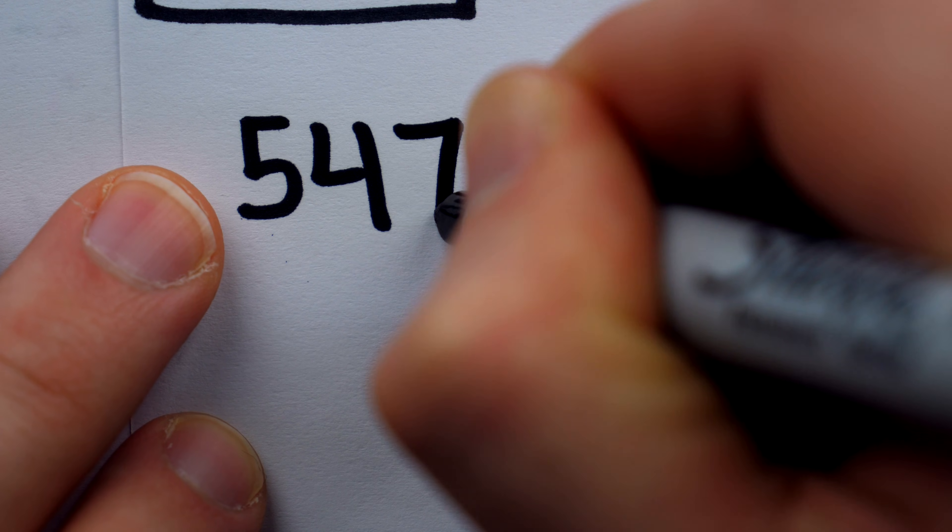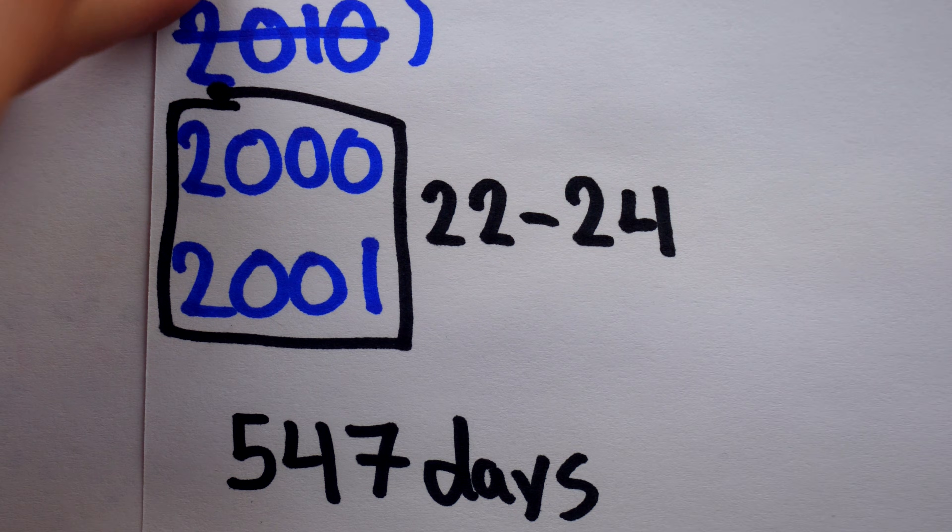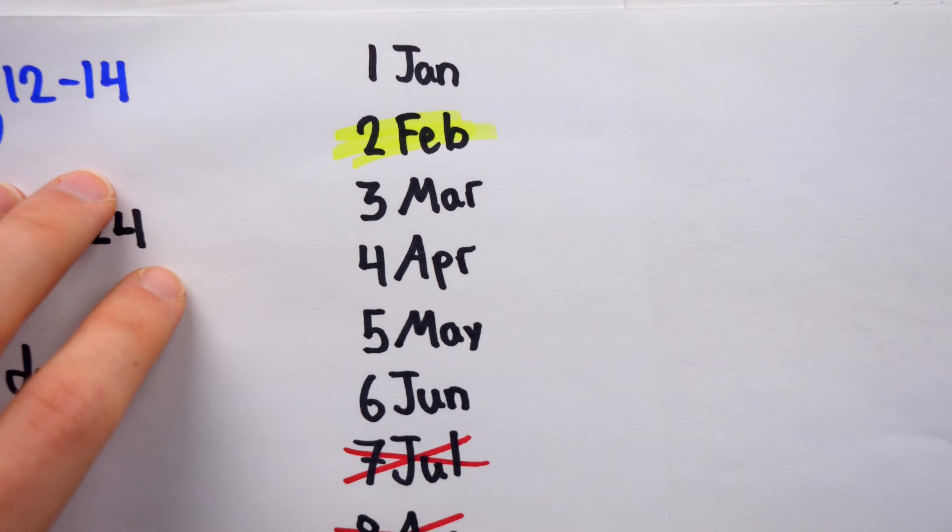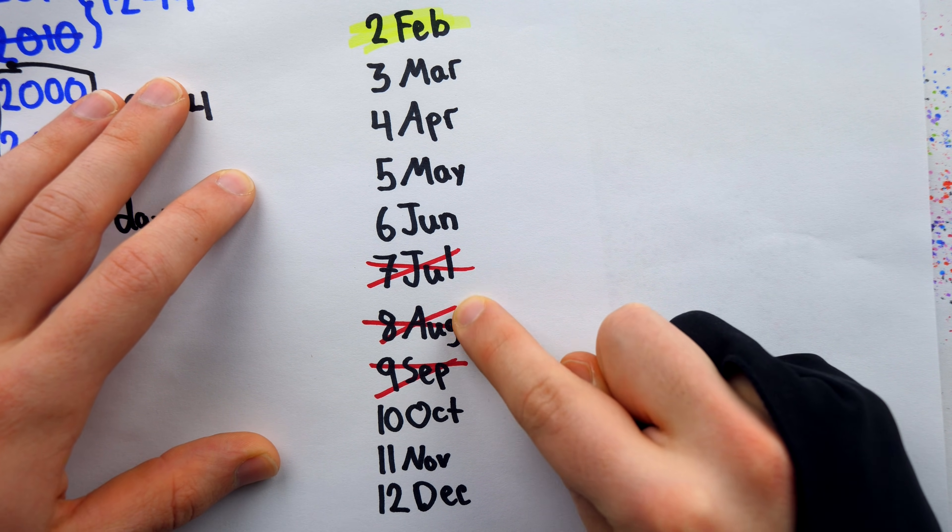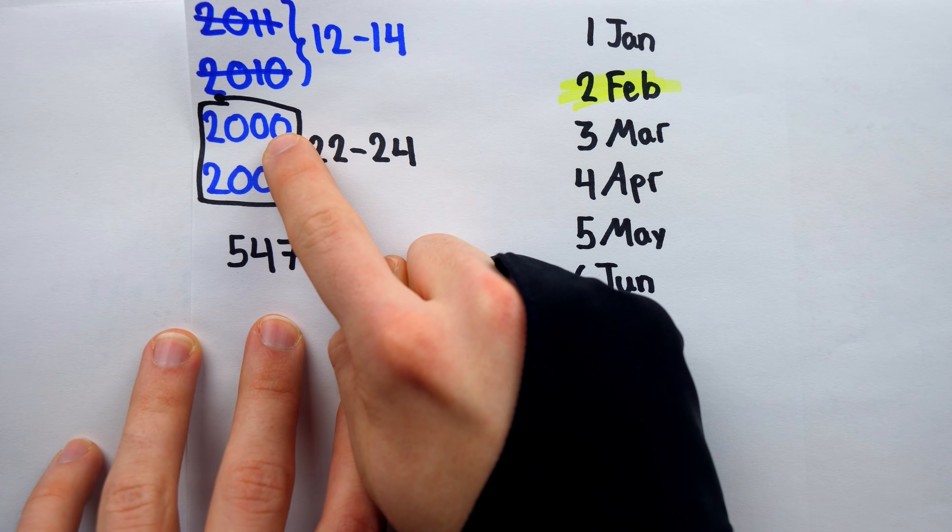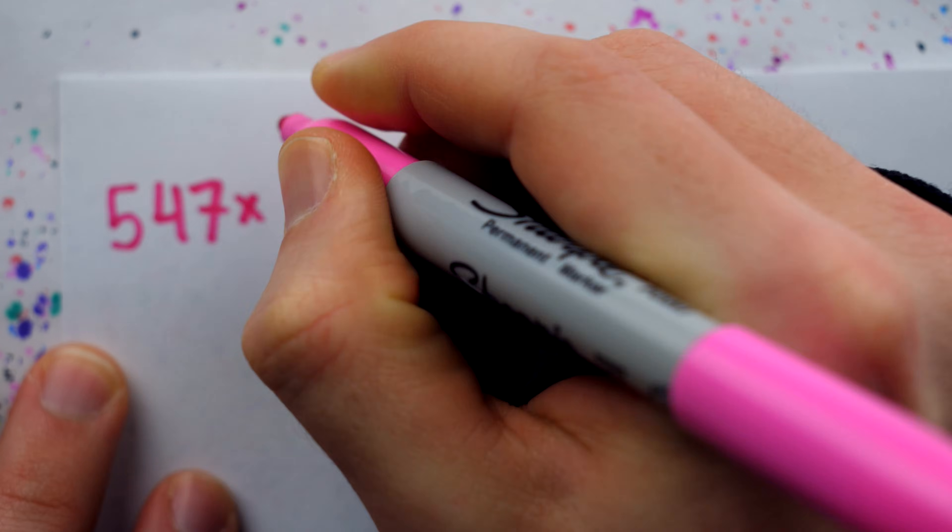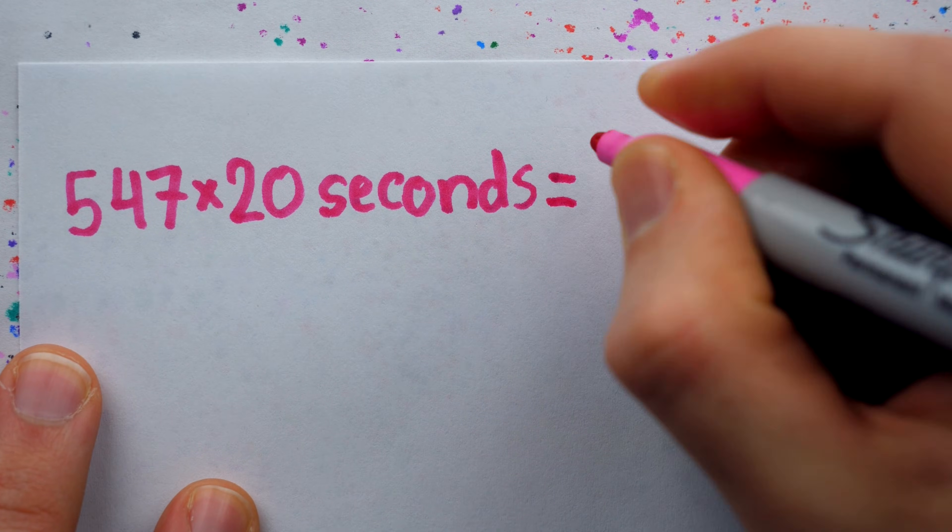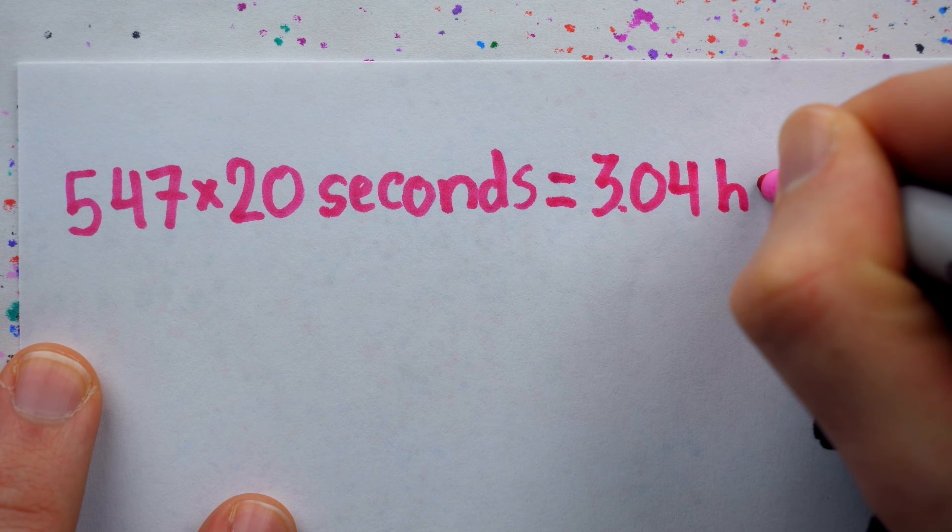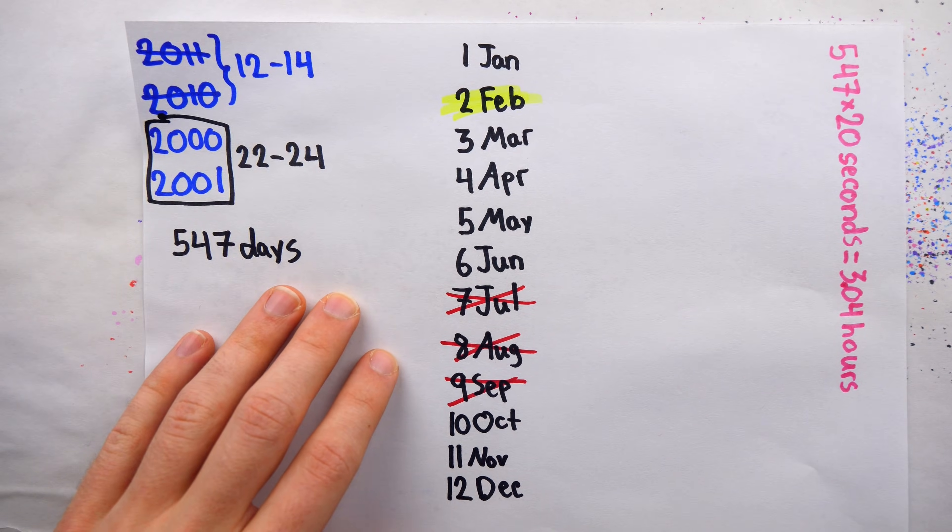So then we've narrowed the possible birthdays to 547 days. Those are all of the days in 2000 and 2001, except for the days in these three months, and with the consideration that February in 2000 had 29 days in it. So 547 days, that's 547 possible phone numbers, which at 20 seconds per phone call would take just over three hours to test. But can we go even further?